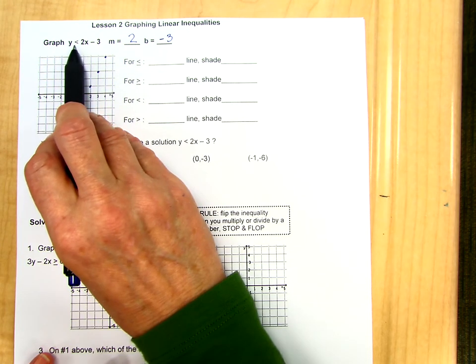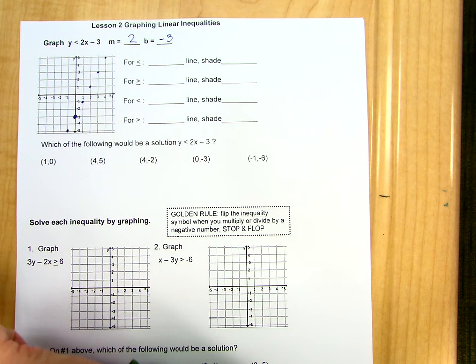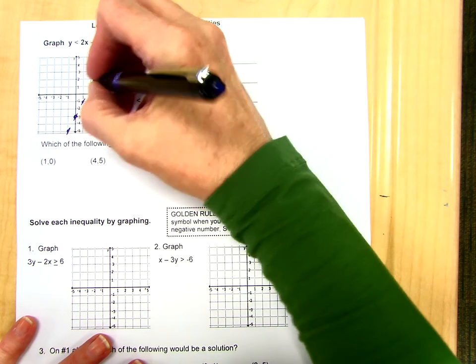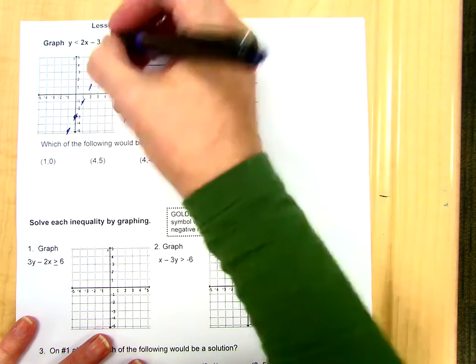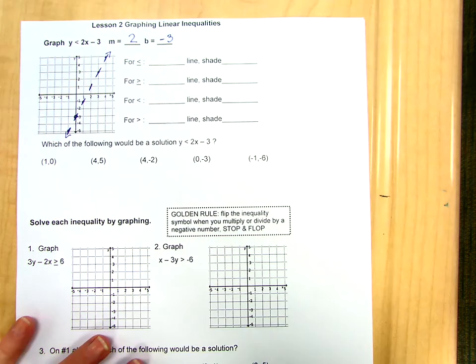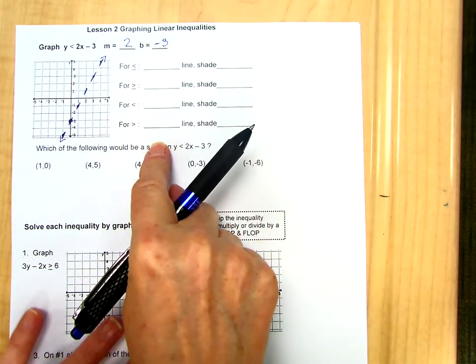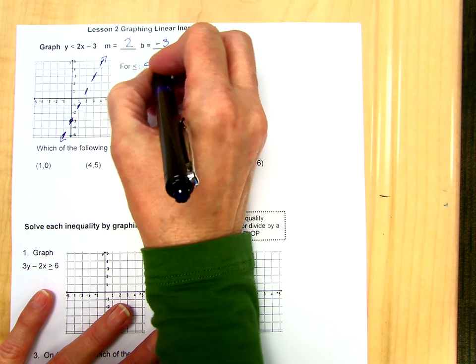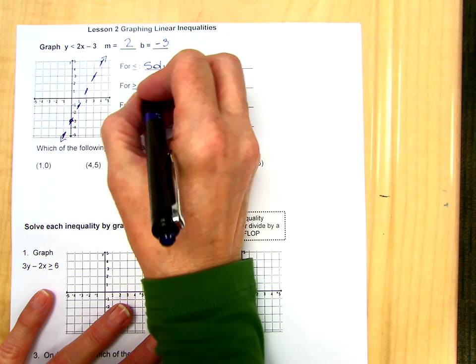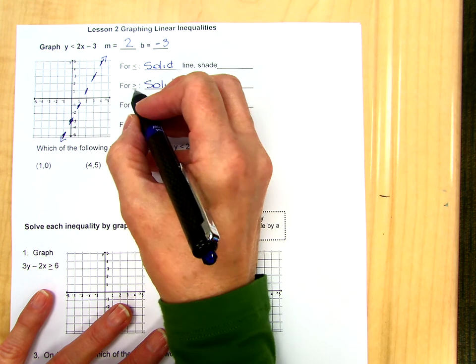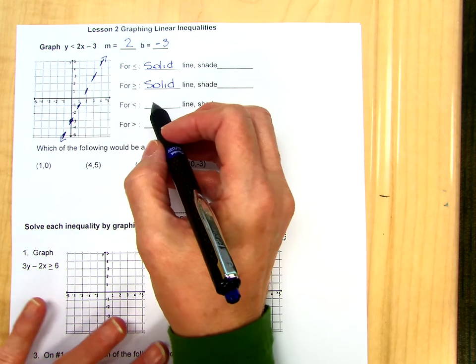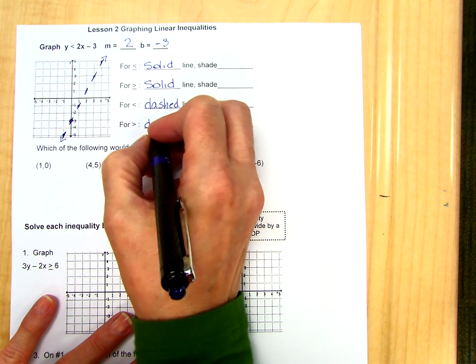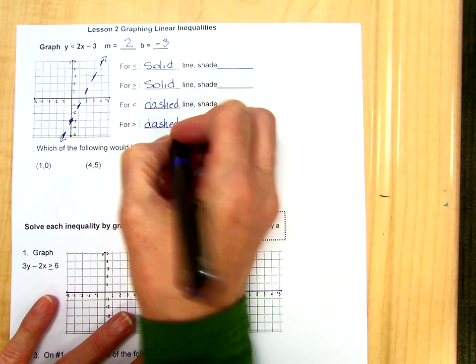Because this is a less than, we do not include the line itself. So what we would do then is just have an open circle, but in the case of a line, that's going to be a dashed line. For less than or equal to, we would have a solid line. For greater than or equal to, we would also have a solid line because it includes the line itself. For less than and greater than, we have a dashed line because the line itself is not included in the solution.